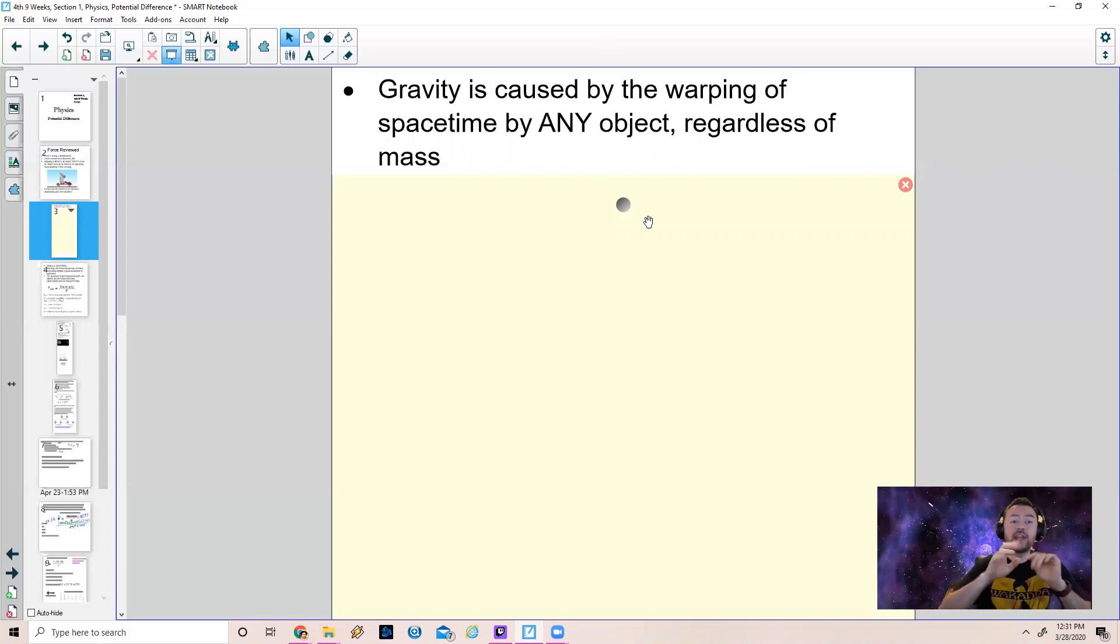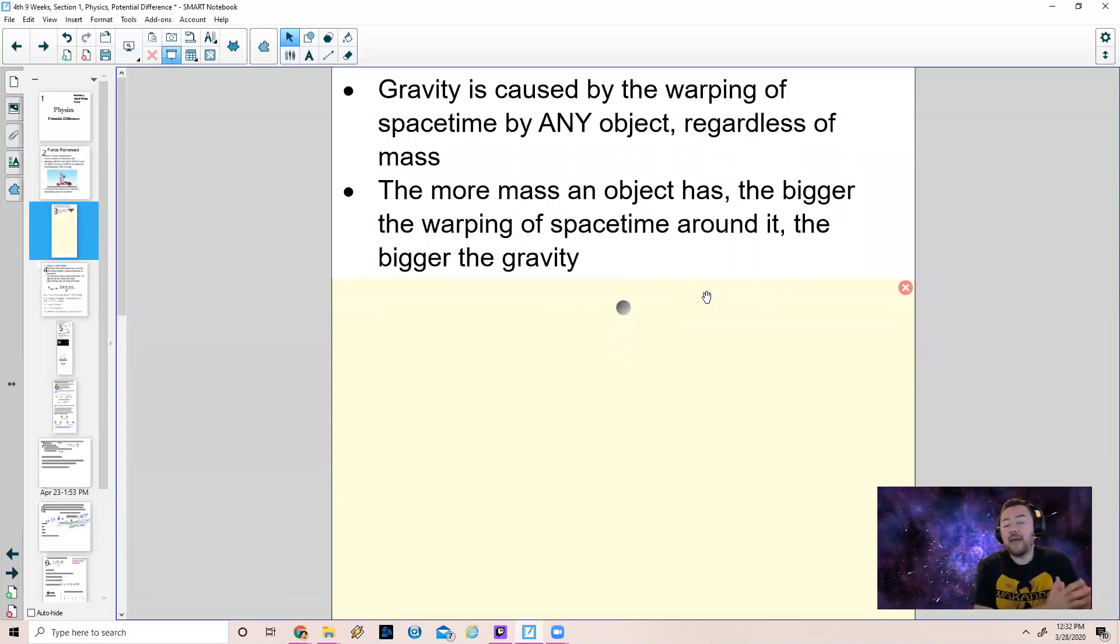Regardless of how massive an object is, whether it's extremely tiny mass like the mass of an electron or something like the mass of a black hole, everything with mass warps space and time around it. But what happens is that an object with more mass warps spacetime more because there's more stuff there. It has a bigger effect on the spacetime around that object. So the more mass of the object, the more warping of spacetime that occurs, the bigger the gravity.